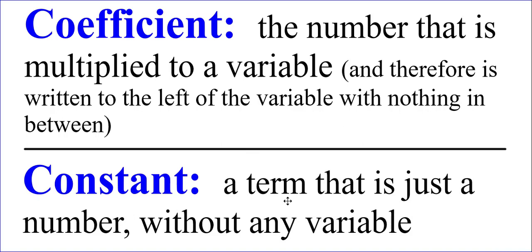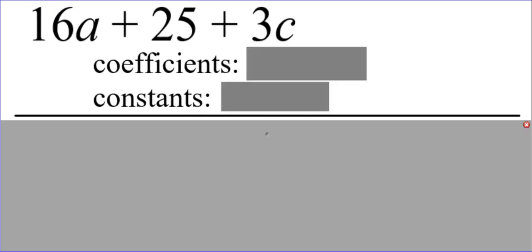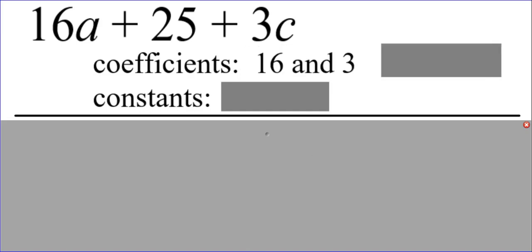Let's look at some examples with the expression we had earlier, 16A plus 25 plus 3C. The coefficients are the 16 and the 3 because they are the numbers that were multiplied to variables. That's what coefficients are. The constant is just the 25 because as you see here, the term that is 25 did not have any variable at all, making it a constant.